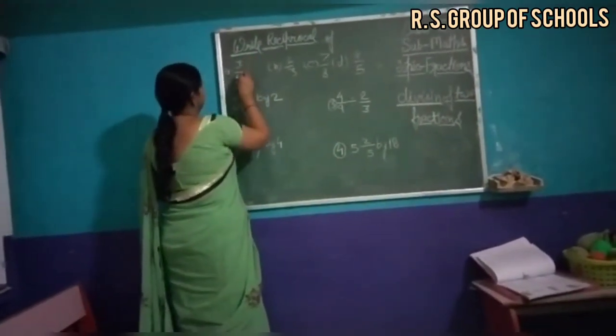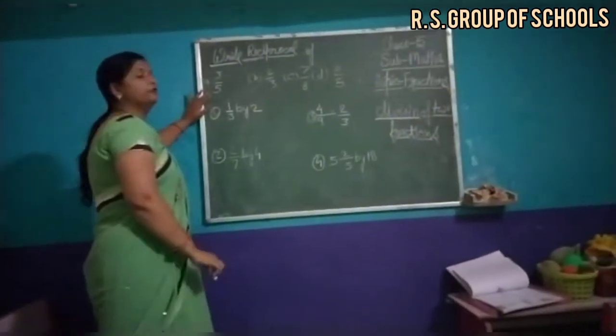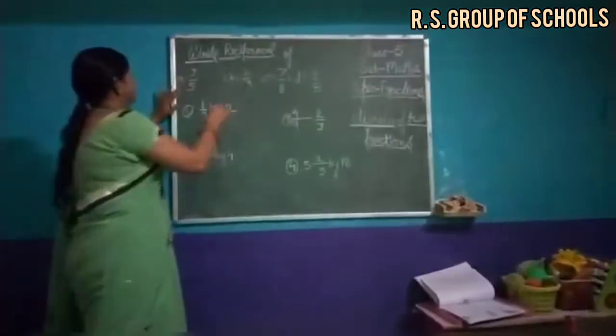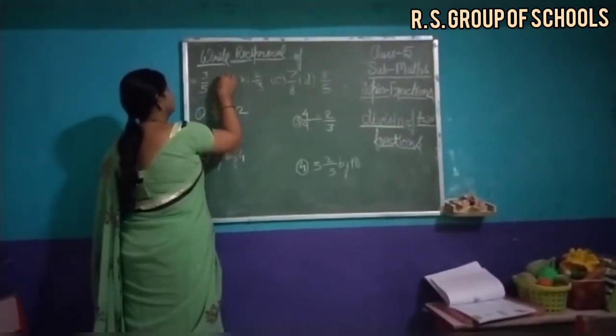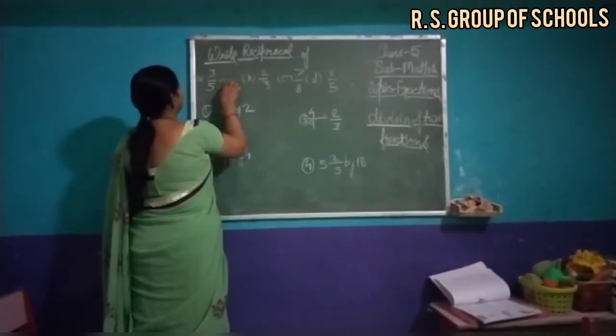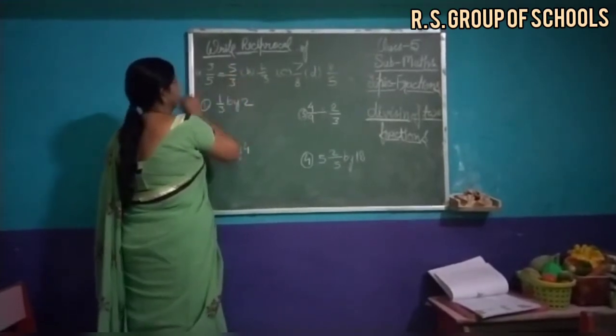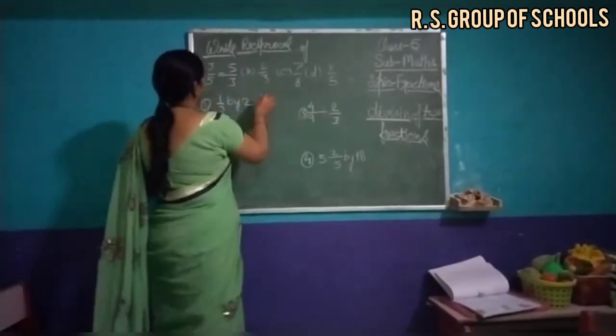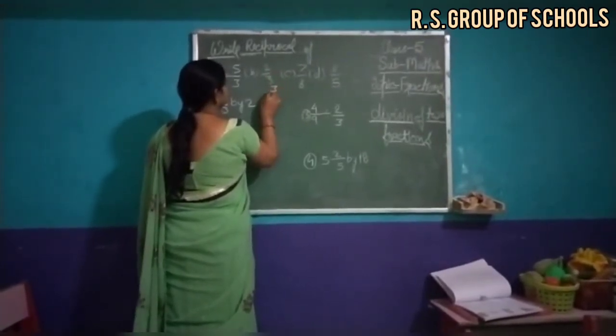First of all, 3 upon 5. Children, reciprocal करने के लिए हमें इस digit को उल्टा करना है. 3 upon 5, when we reciprocal it, it becomes 5 upon 3. Now, 2 upon 3, reciprocal 3 upon 2.